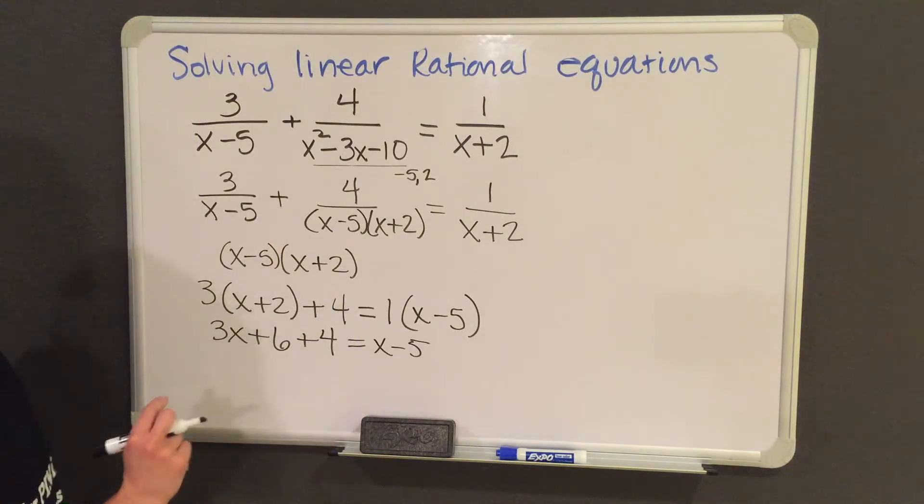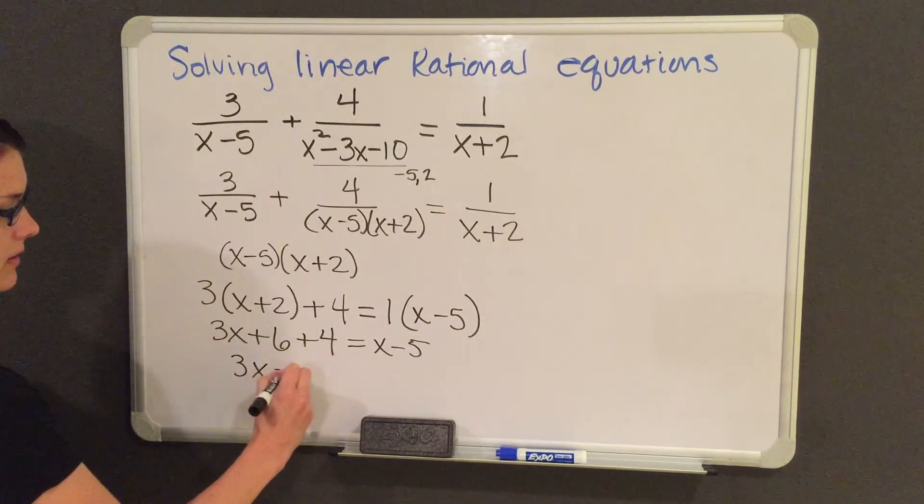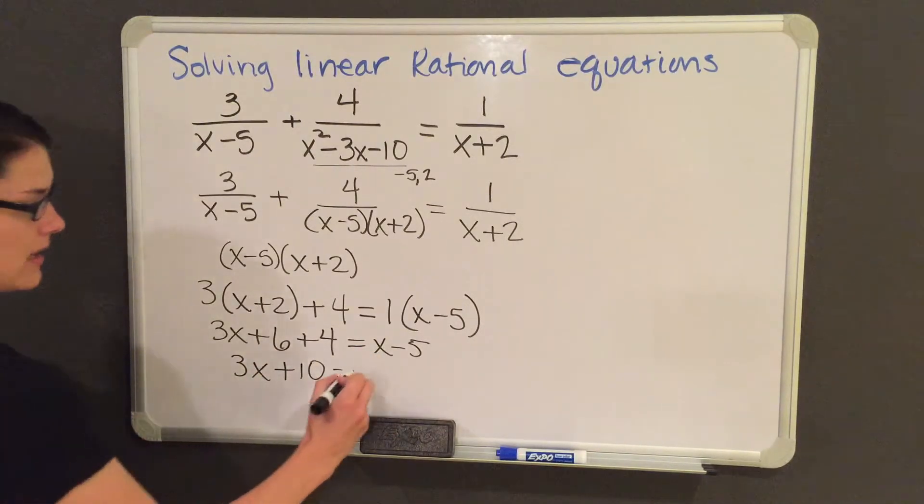I am now going to combine like terms. The only thing to combine on the left side is the 6 and the 4 to give me a 10. And then there's nothing to combine on the right side.